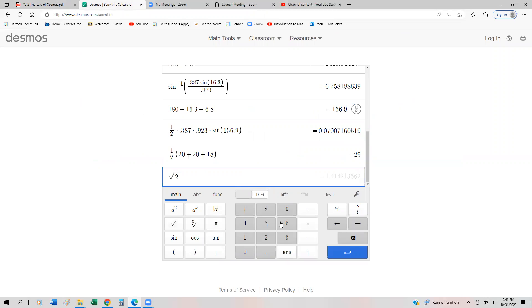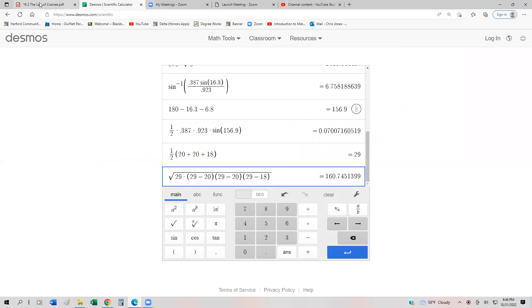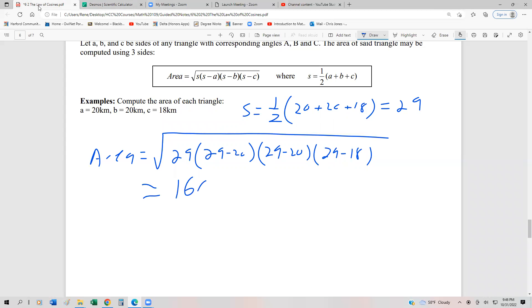So we're going to have the square root of 29 times quantity 29 minus 20 times 29 minus 20 times 29 minus 18. And that gives us 160.7. So this is going to be approximately 160.7, and that's going to be in square kilometers just because our units were initially in kilometers.